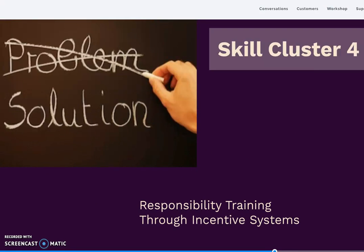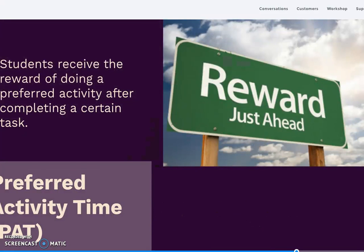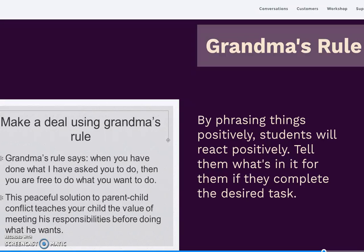Skill cluster 4 is responsibility training through an incentive system. Incentives are very important to Jones. Students receive a reward of doing a preferred activity after completing a certain task. The teacher implements an incentive system using positive reinforcement in which reward follows good behavior. He also applies the grandmother's rule: when you have done what I have asked you to do, then you are free to do what you want to do. Students will be more likely to complete their tasks with positive reinforcement and positive incentives.